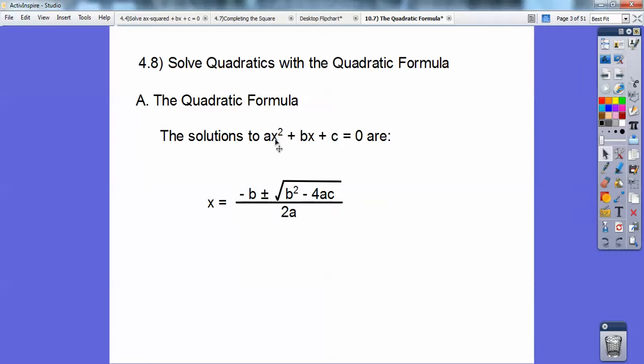The quadratic formula is this. The solution to ax² + bx + c = 0. This works for any quadratic equation, you guys. x equals opposite b plus or minus the square root of b² minus 4ac all over 2a.